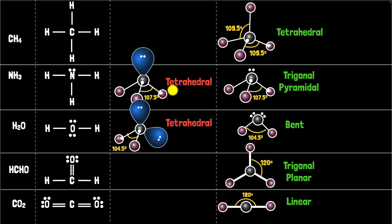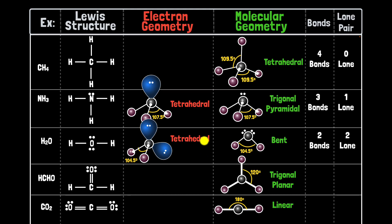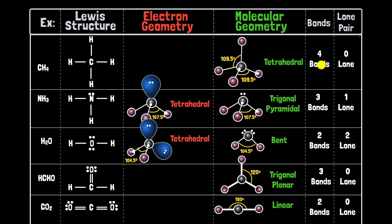Here's a summary. If four electron groups surround a central atom, you get tetrahedral electron geometry. With no lone pairs, the molecular geometry is also tetrahedral. With one lone pair, you get trigonal pyramidal. With two lone pairs, you get bent. Three electron groups give trigonal planar electron geometry; if all three are bonds, the molecular geometry is also trigonal planar. Two electron groups give linear geometry. Rather than memorizing a table, the whole point of VSEPR is to think logically: find the central atom, count the electron groups, determine the electron geometry, remove the lone pairs, and arrive at the molecular geometry.